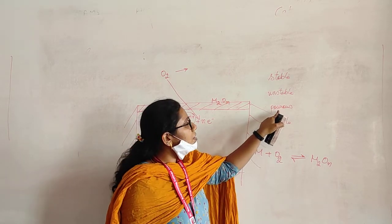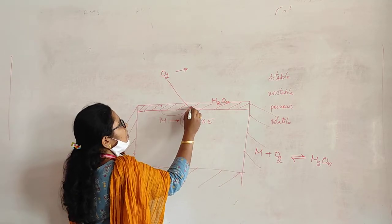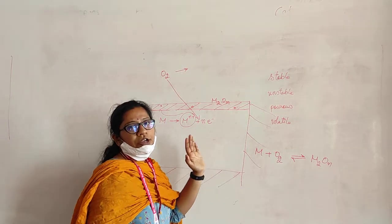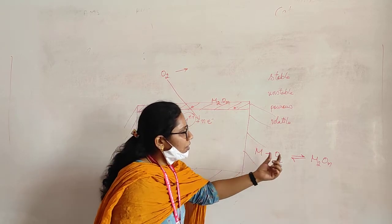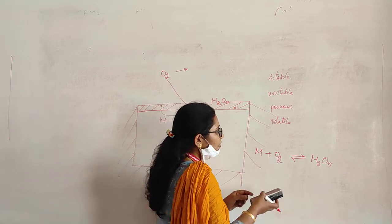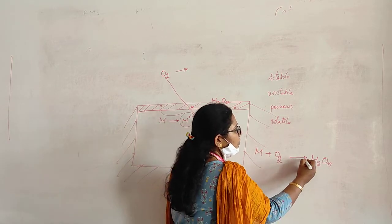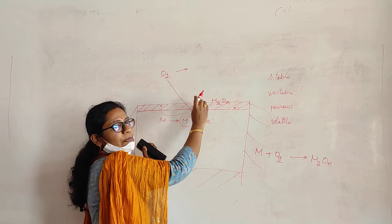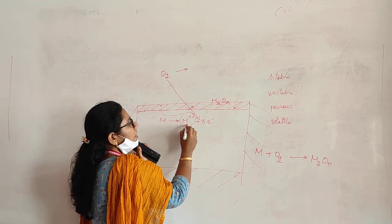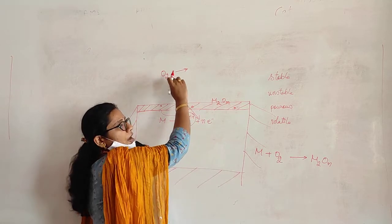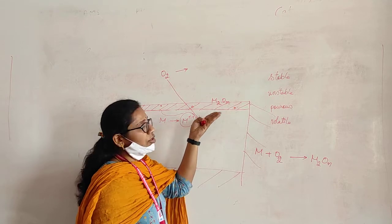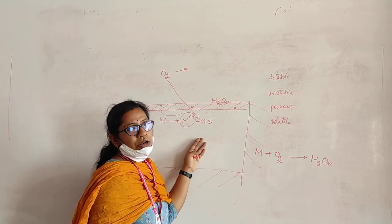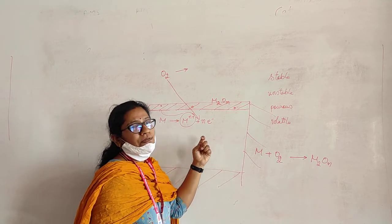Coming to the porous layer — if it is porous, there will be some pores in the metal oxide layer formed. That means the metal oxide layer is not efficient enough, or the size of the metal oxide formed is smaller than the size of the metal. So it will not be able to cover the surface completely. The cracks or pores present in this oxide layer will allow the metal ion to come out to the surface and react with atmospheric oxygen. This corrosion will not be visible to the eye, but the inside parts will also be slowly corroded. This type of corrosion is very harmful.